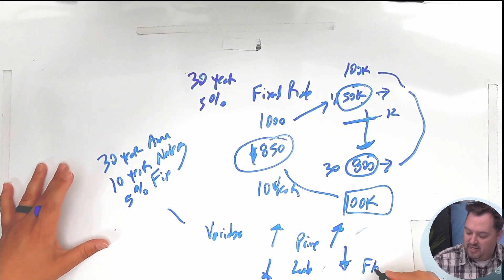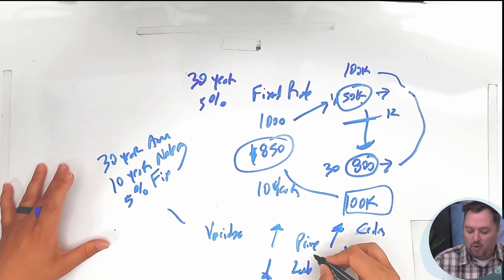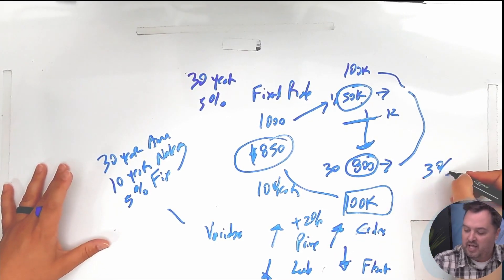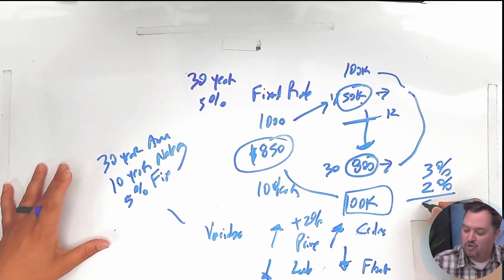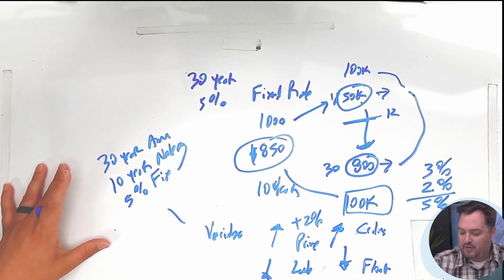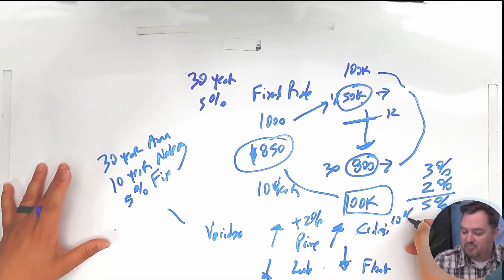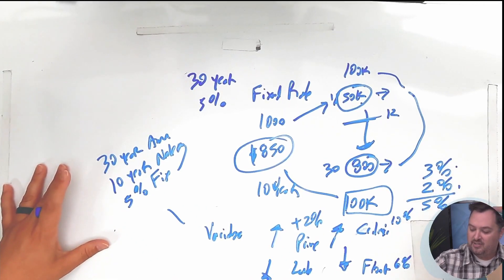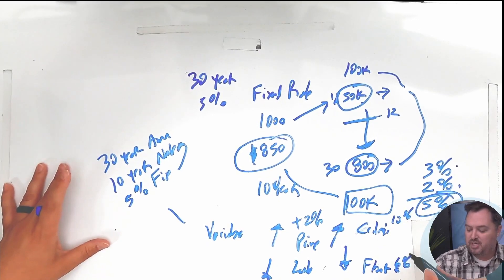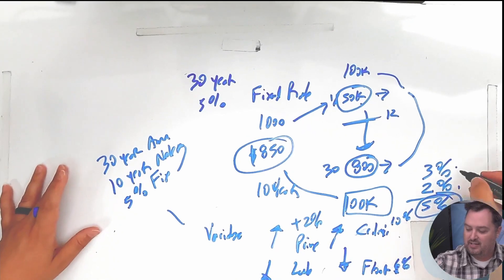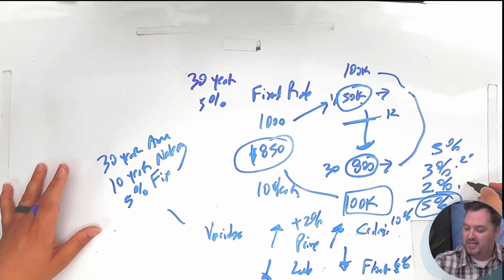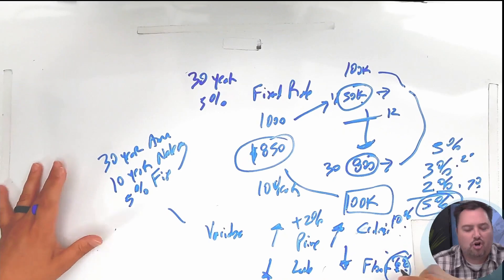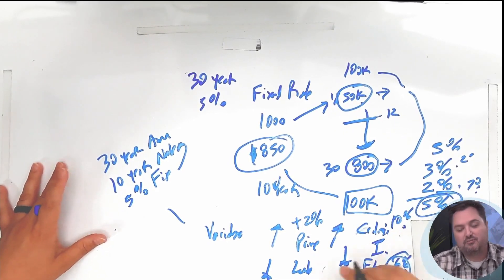The floor is the minimum and ceiling is the maximum. So LIBOR plus 2%—if prime is at 3% and they have a 2% margin, you're paying 5%. But they may have a ceiling saying it won't go over 10%, and a floor saying it can't be less than 6%. So if prime plus margin is 5% but the floor is 6%, they charge you 6%. If prime is 5% and margin is 2%, that's 7%, which is greater than 6%, so you pay 7%. But if it goes over 10%, they charge you the 10%. That's called a floor and ceiling.